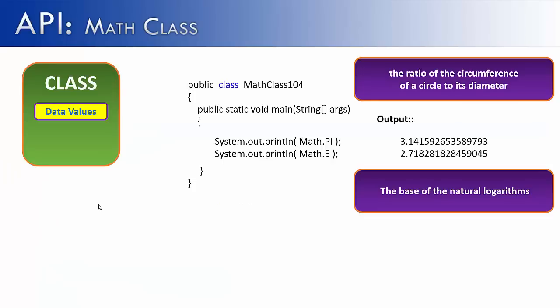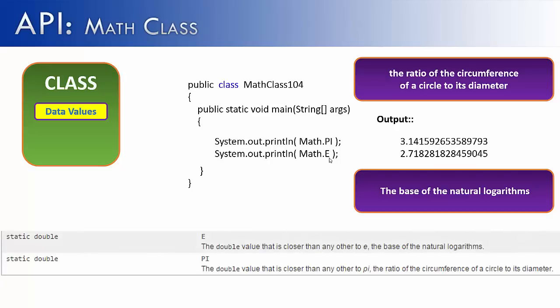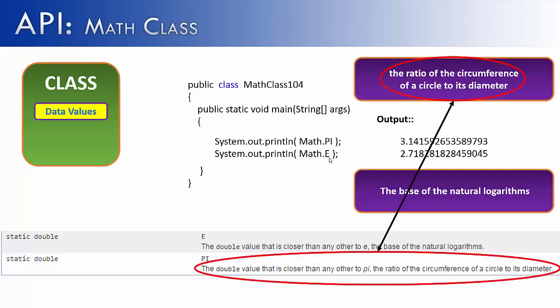Not only does the API have methods inside of it, but it can also have data values. And two data values that we have here are pi and e of the math class. And this is what it would look like in the API. And you'll notice it says specifically what data type that particular value is. So we know that pi and e are of the data type double. And we also have their definition. And again, their definition is giving far more information than what I have written there. And so if you want exact information about a particular item, go to the API.